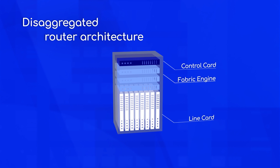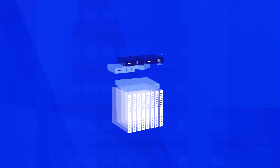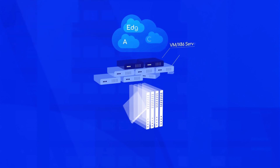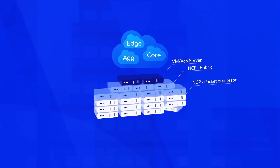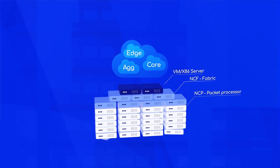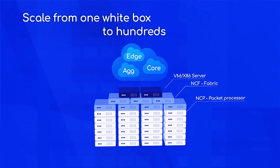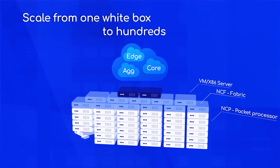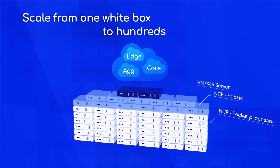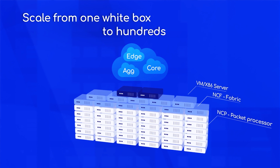Second, it disaggregates the control plane from the data plane. The data plane is based on two white box building blocks: NCP and NCF. A single NCP is a four terabit per second router, while clustering NCPs and NCFs together creates any size router up to 768 terabits per second. This creates a very flexible router model.